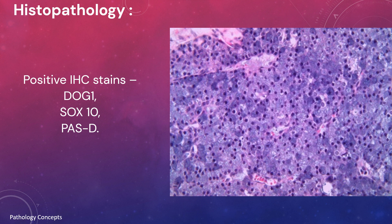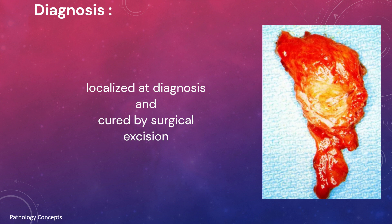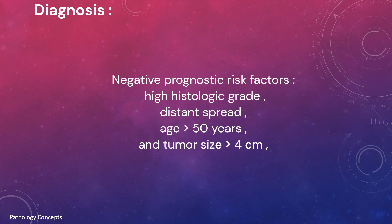DOG1 and SOX10 are expressed in benign acinar cells and intercalated ductal cells and other salivary gland neoplasms. However, strong diffuse expression of these markers can help distinguish acinic cell carcinoma from other salivary gland neoplasms.